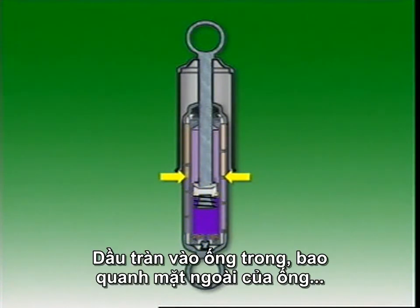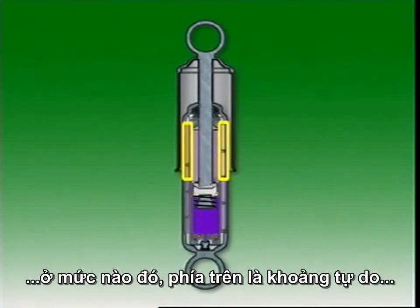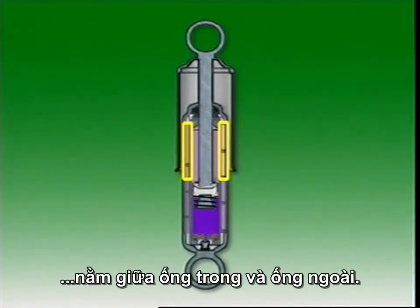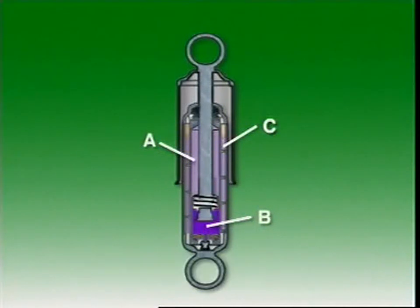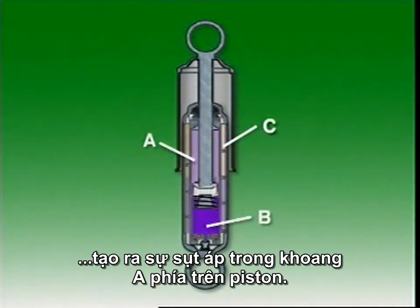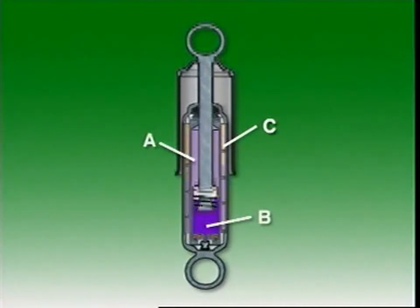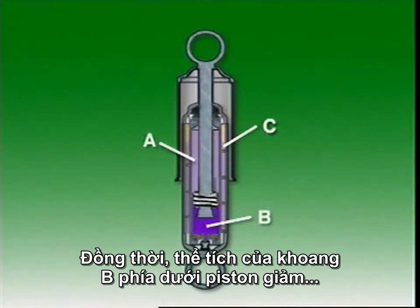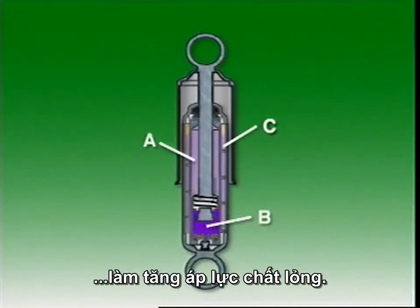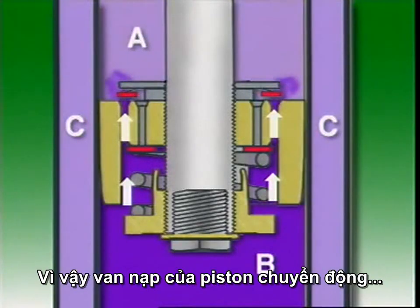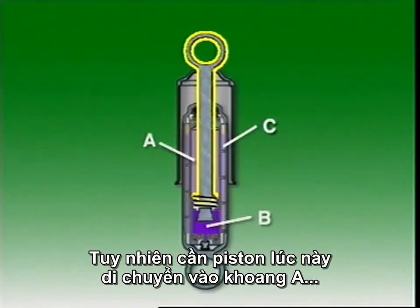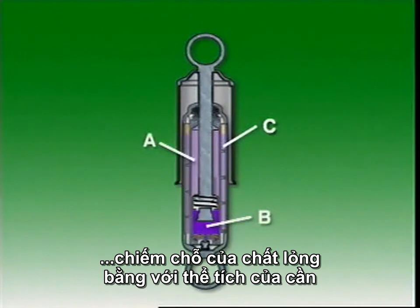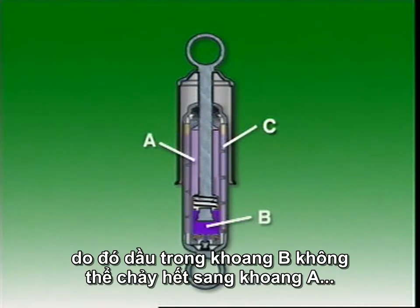Oil fills the inner tube and surrounds its outer surface to a level which allows a free space or reservoir to exist above it between the inner and outer tubes. On bump or compression, the piston and rod move downwards in the cylinder, resulting in a small pressure drop in chamber A above the piston. At the same time, the volume of chamber B below the piston is reduced, causing high fluid pressure. This unseats the piston intake valve and fluid flows up through the outer passages in the piston into chamber A. However, the piston rod is also entering A and displacing a quantity of fluid equal to its volume, so all of the oil in B cannot flow into A.